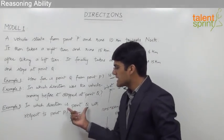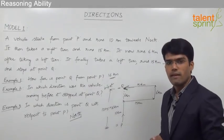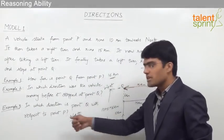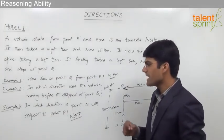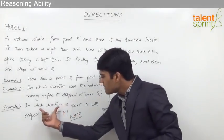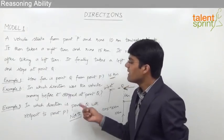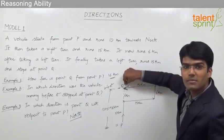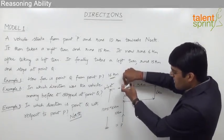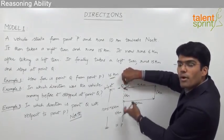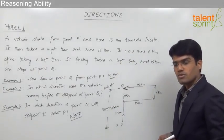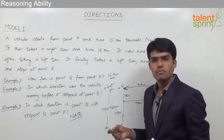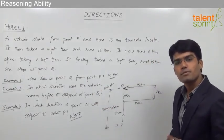Remember, while solving these types of questions we need to be a little careful. If the points P and Q are interchanged in the question, the answer also changes. For example, if the question asks in which direction is point P with respect to point Q, we stand at point Q, and then P becomes towards the south of point Q — so the answer would be south.